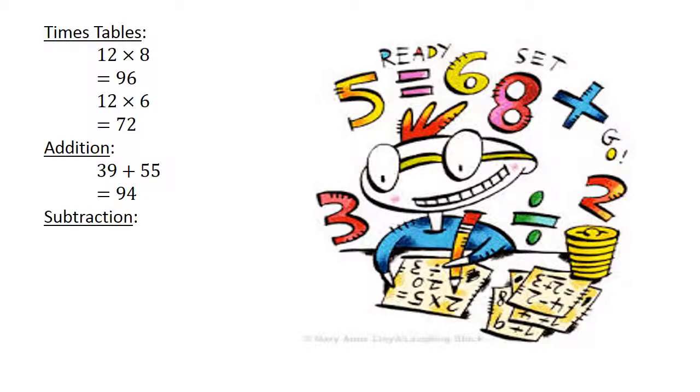Subtraction. 52 minus 94 equals negative 42.